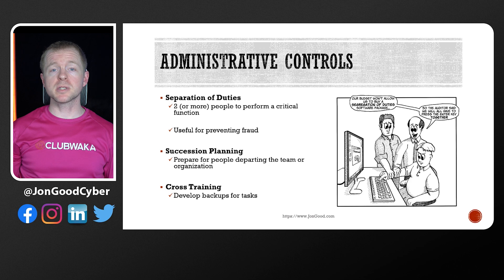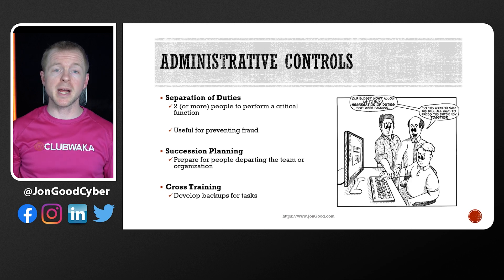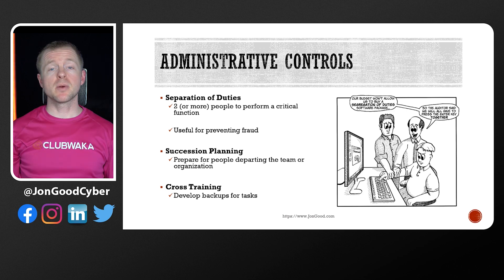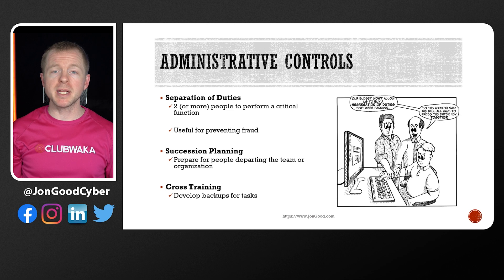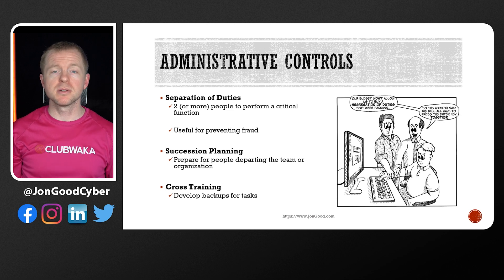Administrative controls cover a lot of areas, to include things like change control that identifies how we implement changes to our network, configuration management to track and approve changes of systems, and business continuity and disaster recovery planning so that we can plan for disasters.